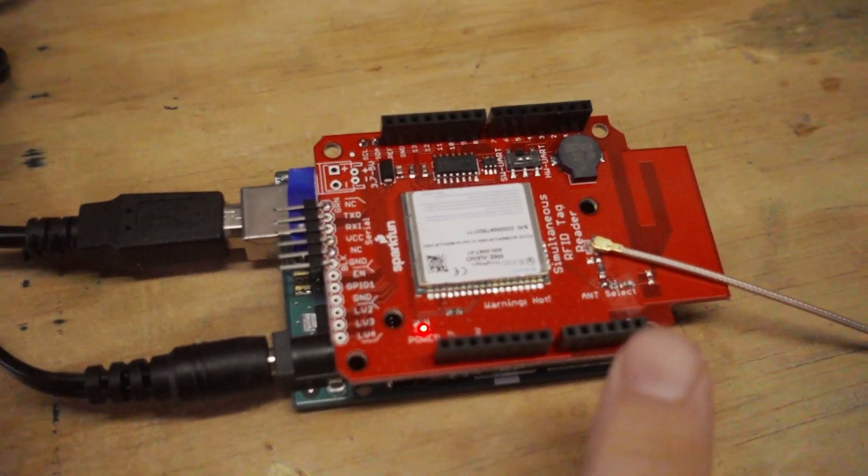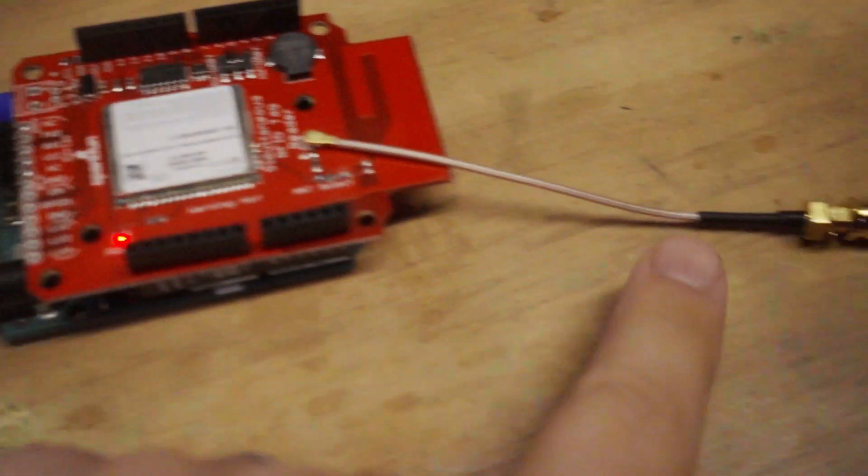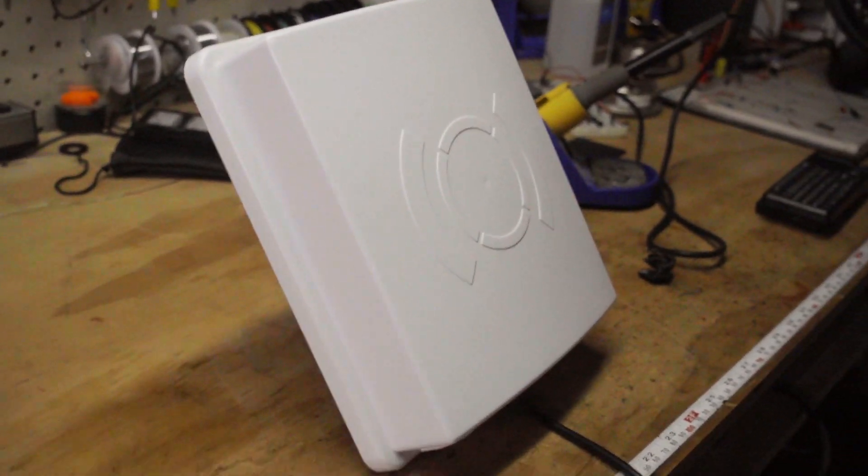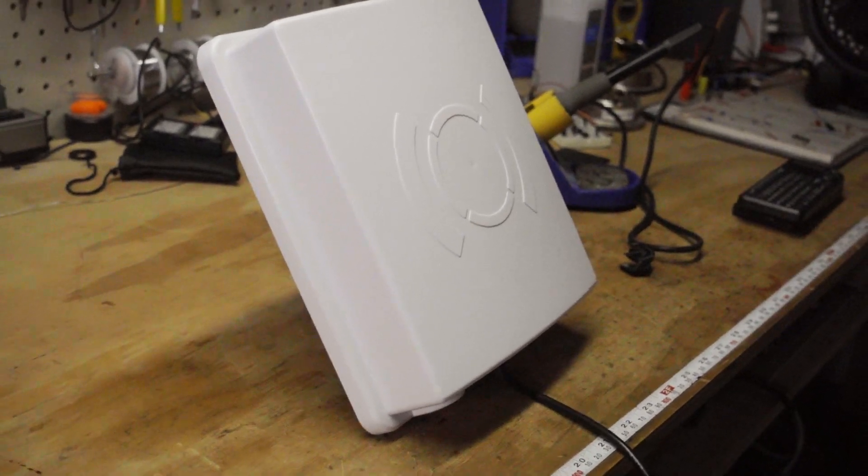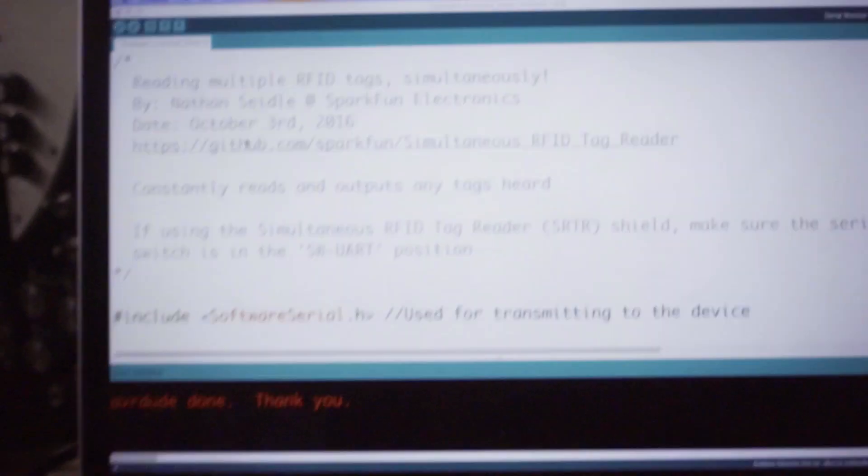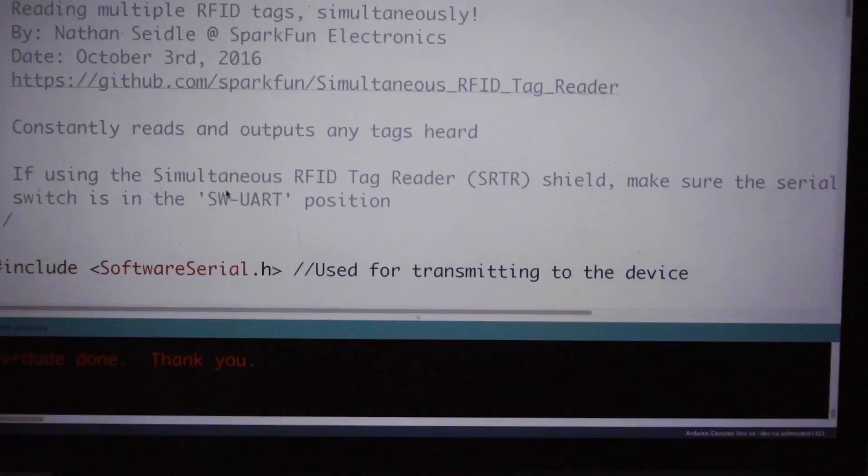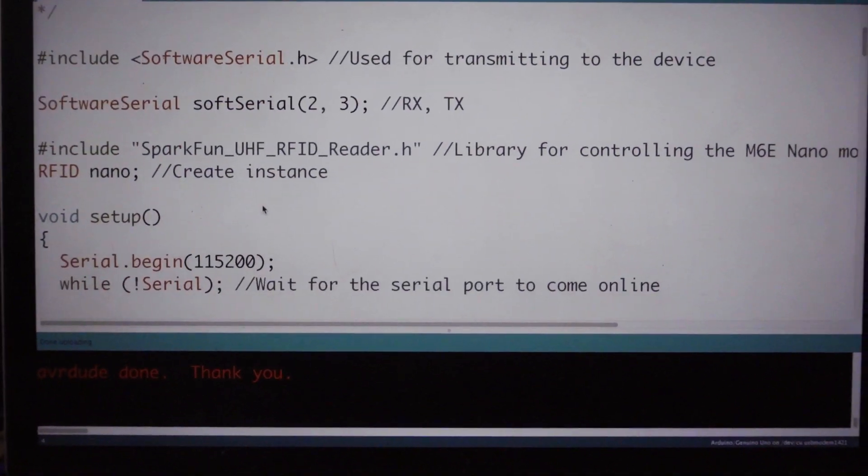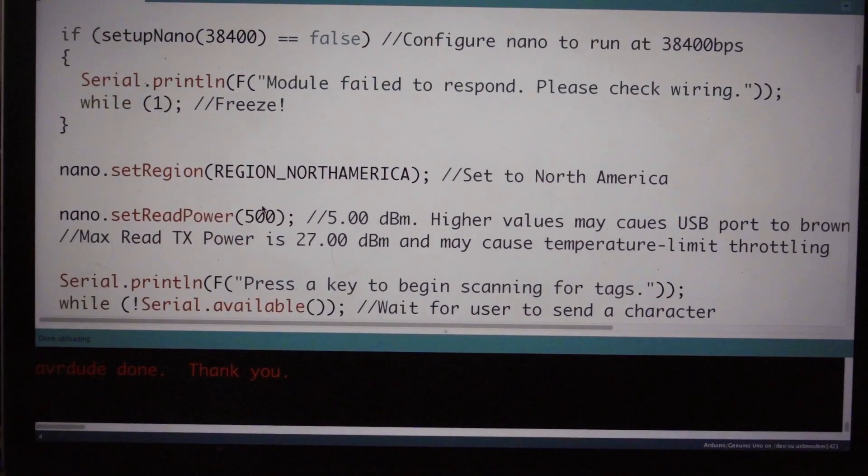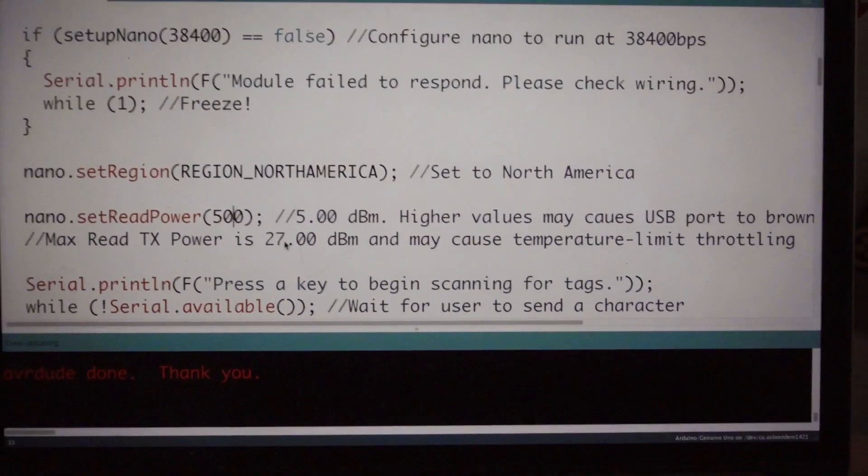So I've rerouted the antenna to go out through this external antenna, which is gigantic, but hopefully will give me the range that I need. Let's do a range test. I'm going to go back to my same example that I just used before.